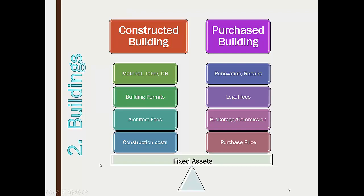When I construct a building from the ground up, all material, labor, overhead, permits, and architect fees — everything it takes to construct that building — gets recorded as building cost. If there's already a building on the property and I purchase it as-is, renovation, repair, painting, legal fees, brokerage and commission fees, plus the original purchase price are all included. Basically: what did I pay for that building and what did it take to get it into operational use?